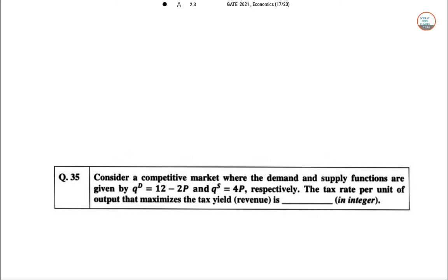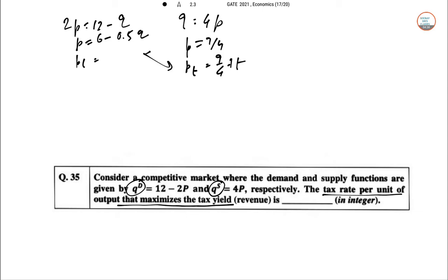Q35 says: Consider a competitive market where the demand and supply functions are given as Qd = 12 - 2P and Qs = 4P. The tax rate per unit of output that maximizes the tax yield (revenue) is what? So we'll set demand equal to supply for equilibrium.